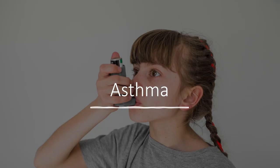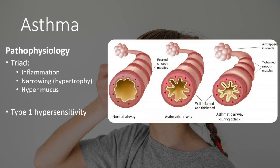Asthma has a pathophysiology involving a triad of inflammation, narrowing causing hypertrophy, and hypermucosecretion. In a normal airway, we have a clear lumen and relaxed smooth muscles. In asthma, we have thickening of the walls, inflammation of the mucosa, and high mucus secreted by goblet cells.